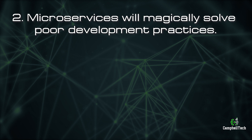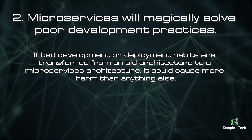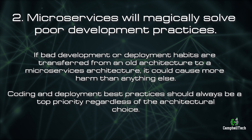Number two: microservices will magically solve poor development practices. If bad development or deployment habits are transformed from an old architecture to a microservices architecture, it could cause more harm than anything else. Coding and deployment best practices should always be a top priority regardless of the architectural choice.